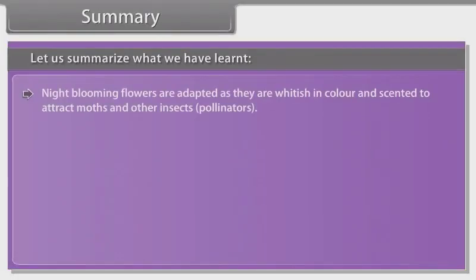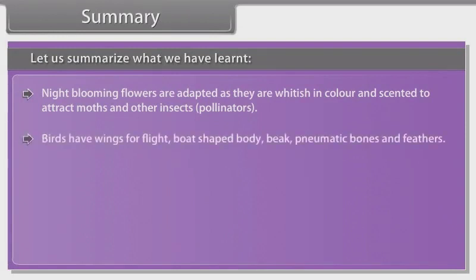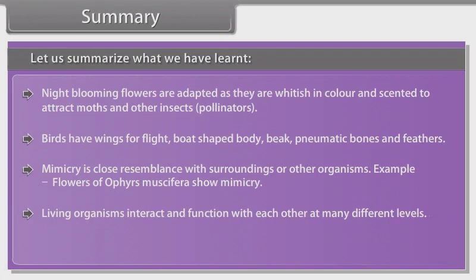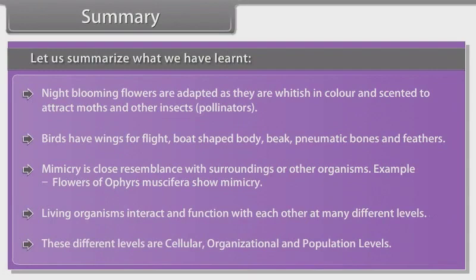Night-blooming flowers are adapted as they are whitish in color and scented to attract moths and other insect pollinators. Birds have wings for flight, a boat-shaped body, beak, pneumatic bones, and feathers. Mimicry is a close resemblance with surroundings and other organisms — for example, flowers of Ophrys musifera show mimicry. Living organisms interact and function with each other at many different levels: cellular, organizational, and population levels.